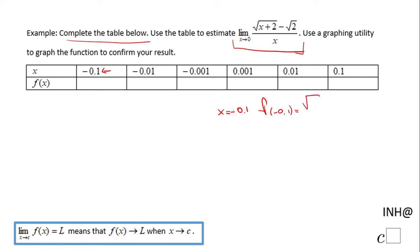You're going to plug it in, like I said, in this function and you're going to have negative 0.1 plus 2 minus square root of 2, over negative 0.1. If you grab a calculator and you put this in the calculator, you should end up with 0.358.